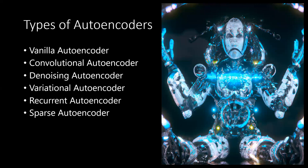The fourth type is the variational autoencoder, which learns to generate new data samples by sampling from a learned distribution. It has an encoder that maps input data to a latent space and a decoder that maps samples from the latent space back to the original data space. The fifth type is the recurrent autoencoder, designed to process sequential data such as text or time series data, using recurrent neural networks in the encoder and decoder to process and generate sequences.